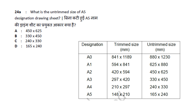What is the untrimmed size of A5 designation drawing sheet? For A5 drawing sheet, the untrimmed size is 165 by 240mm. The answer is option D: untrimmed size of A5 designation drawing sheet is 165 by 240mm.